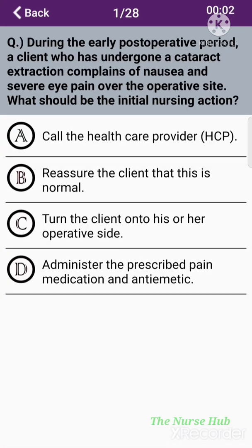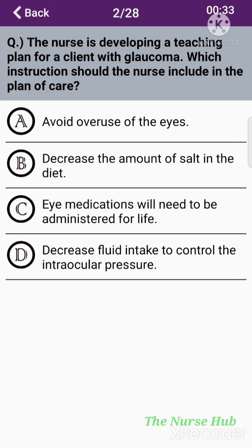The first question: During the early postoperative period, a client who has undergone a cataract extraction complains of nausea and severe eye pain over the operative site. What should be the initial nursing action? Option A: Call the healthcare provider. Option B: Reassure the client that this is normal. Option C: Turn the client onto his or her operative side. Option D: Administer an antibiotic. The correct answer is option A: Call the healthcare provider.